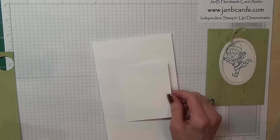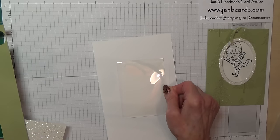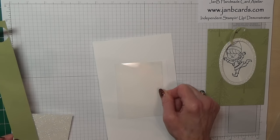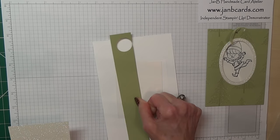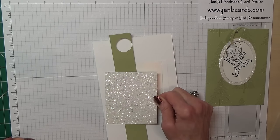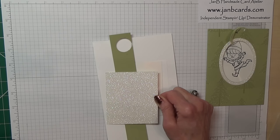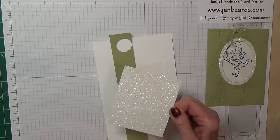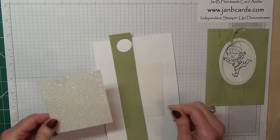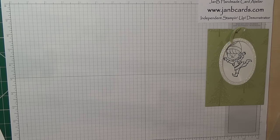Another piece of whisper white which is four inches by three, some of our window sheet which is a very good quality acetate and that measures four inches by three inches. You want a scrap of Pear Pizzazz and you need a piece of our Dazzling Diamonds Glimmer paper which measures three and three quarters by three and a quarter.